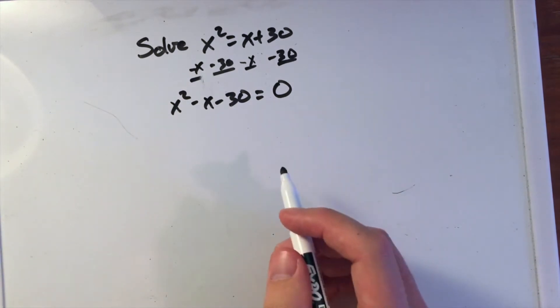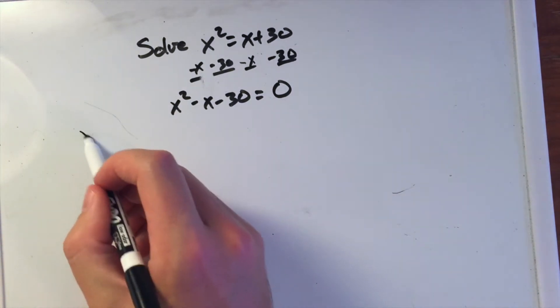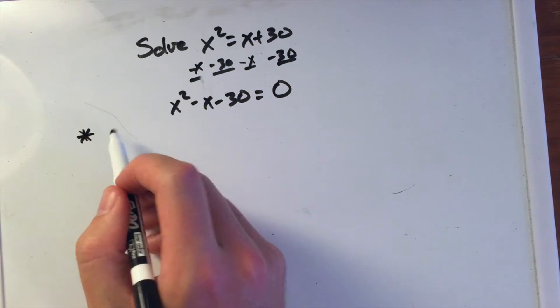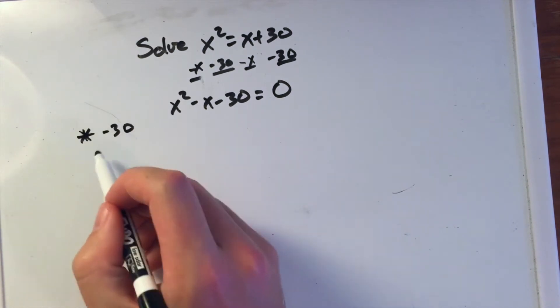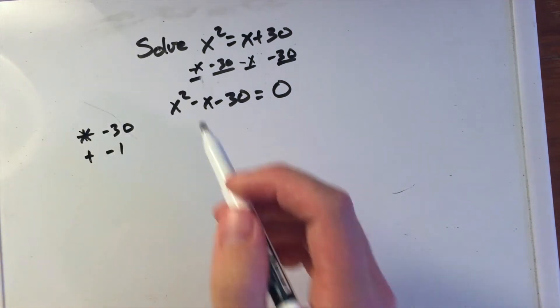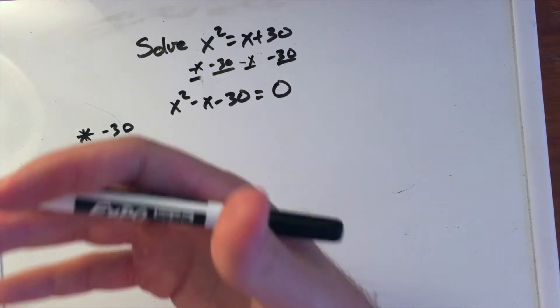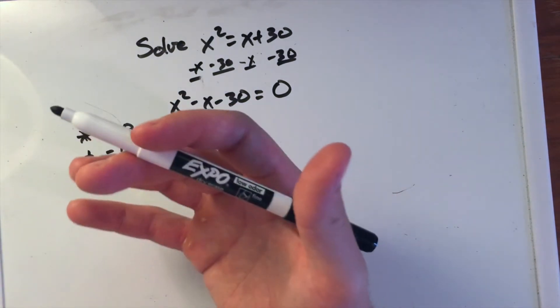My goal is to say, what two numbers multiply to be negative 30 but add to be negative 1?